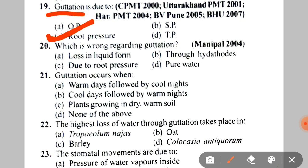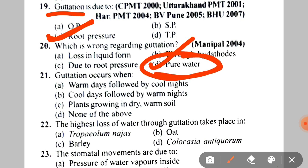Next: which is wrong regarding guttation? A. Loss in liquid form, B. Through hydathodes, C. Due to root pressure, D. Pure water. Guttation water is actually impure water, so option D is wrong. Next: guttation occurs when A. Warm days followed by cool nights. This is the correct answer — guttation occurs during warm days followed by cool nights.